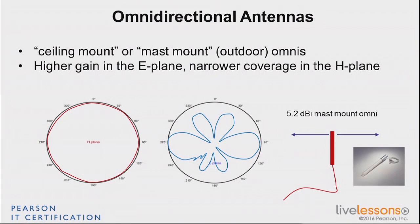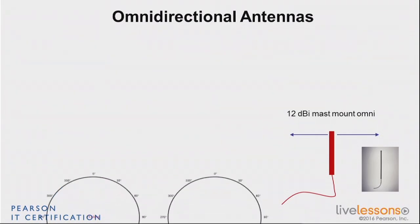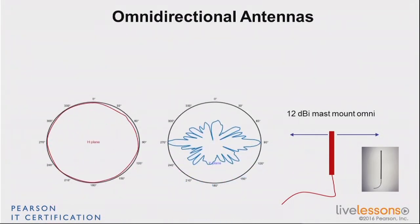It can get even more powerful with a higher gain. This one is a 12 dBi mast mount omni. When you look at the radiation pattern, same on the H-plane — it's pretty circular, 360 degrees. But if you look at the E-plane, it's a lot flatter than even the 5.2 dBi. That means that with the same amount of energy, it's going to radiate much farther away in the E-plane, but the signal is going to be flatter.